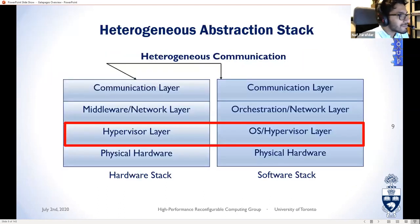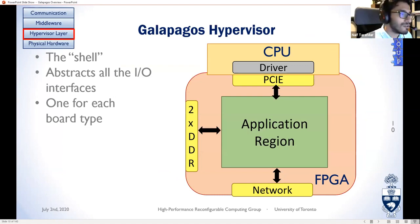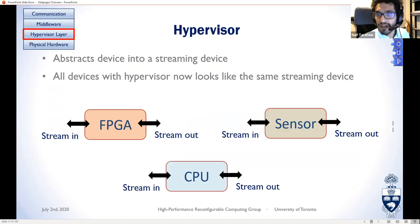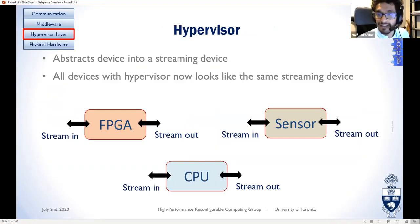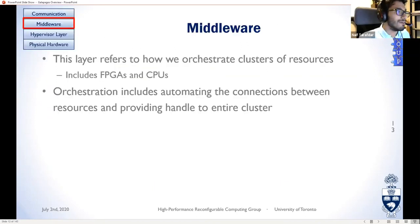The approximate cost difference between the two data centers is 50x, but with the same abstraction layers it works on both. With the right abstractions a user doesn't have to code differently regardless of which data center they have. We have a hypervisor — also called a shell in Microsoft nomenclature — which abstracts away an individual node and all its IO devices, whether CPU or FPGA. Once we apply the shell, each node looks the same: a stream-in and stream-out device, so we can connect them together.